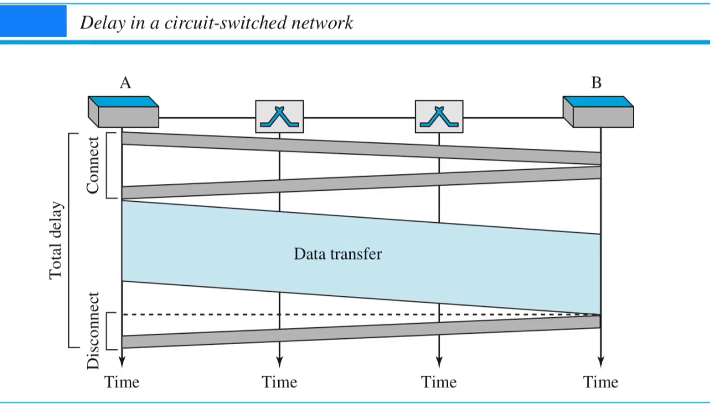The total delay in circuit switched network is calculated as shown in the diagram. Connection setup, that is a request of a connection from A to B, will be transmitted through the path. As an acknowledgement you can see there is a connection confirmation from B to A through the switches. And next is data transfer, at last connection teardown. Hence total delay is equal to connection setup time plus data transfer plus the time to disconnect.